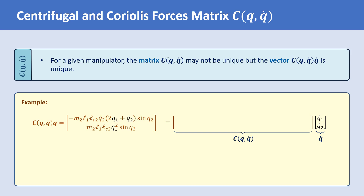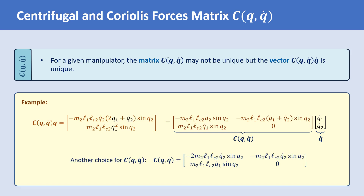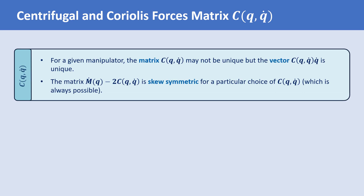One possible choice of matrix C is shown here. However, it is also possible to choose a different matrix C. The question is: which of these matrices should be chosen? The answer is that they are all acceptable, as the product of matrix C and vector Q̇ is unique. However, we choose a matrix C that has a particularly nice property: for a specific choice of C, which is always possible, the matrix Ṁ − 2C is skew symmetric.